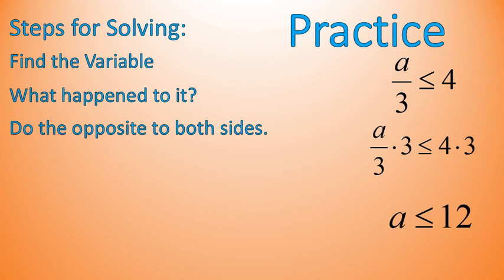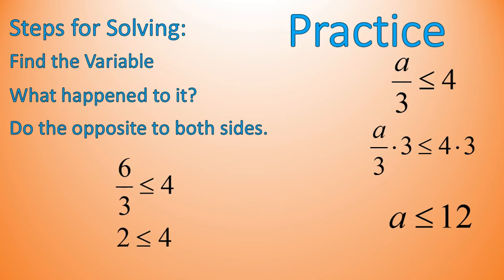Let's do some checking. I'm going to pick a number that's less than or equal to 12. I'm also going to pick a number that is easily divisible by 3 — you don't have to do that, it just makes life easy. So I'm going to pick the number 6. 6 divided by 3 is 2, and 2 is less than or equal to 4. So that worked out.